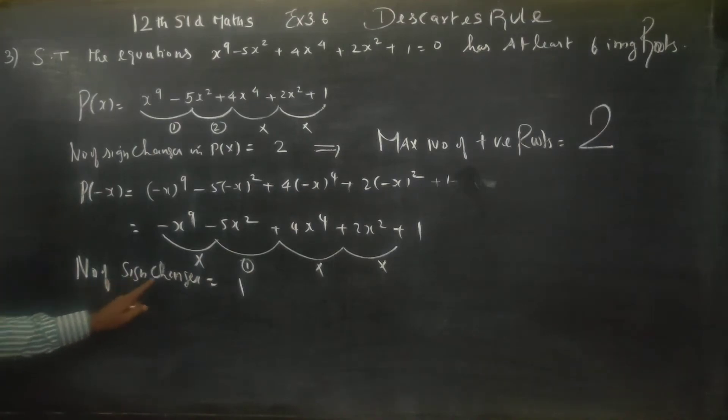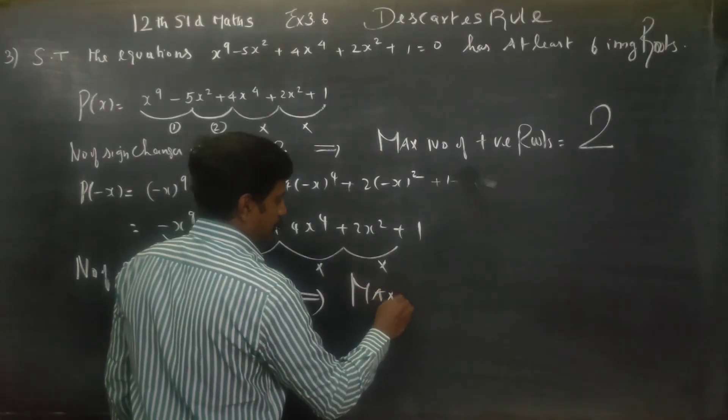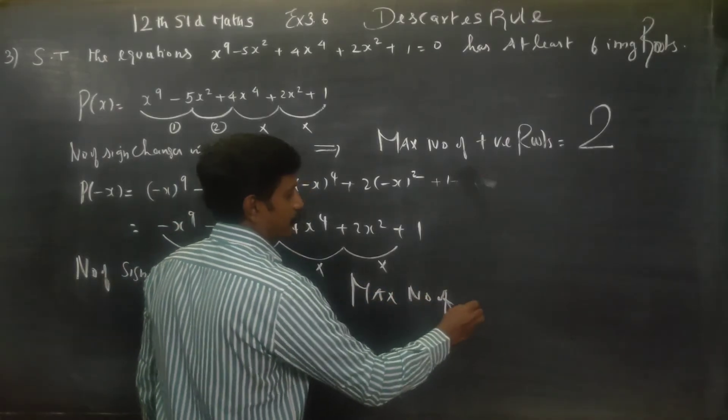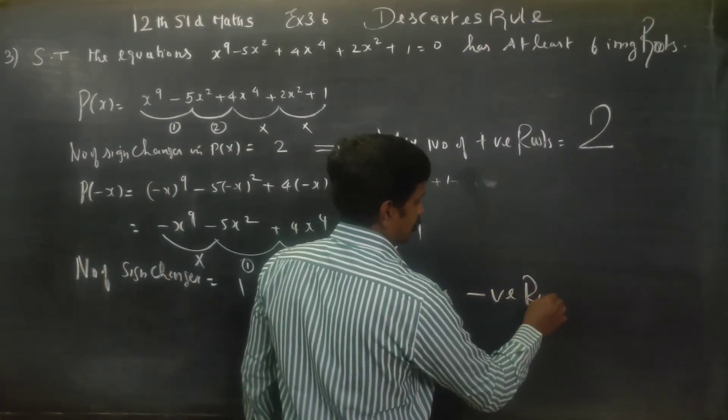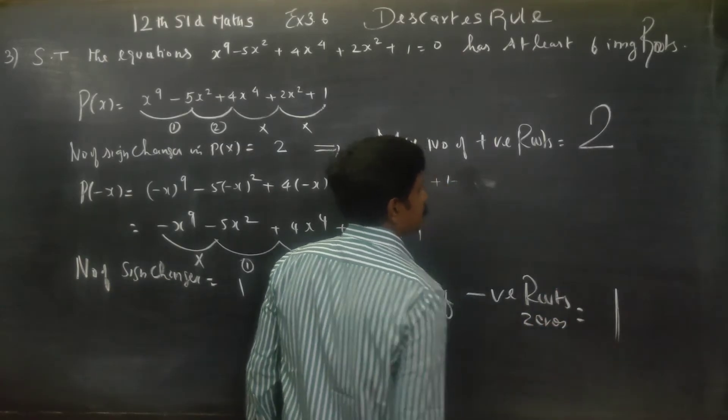Number of sign changes is equal to 1. Implies maximum number of negative roots, negative zeros, is just 1.